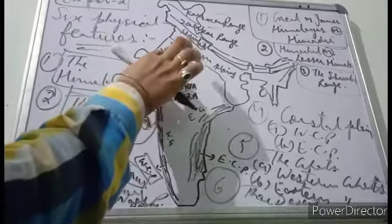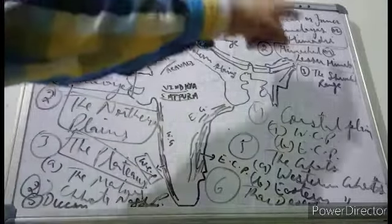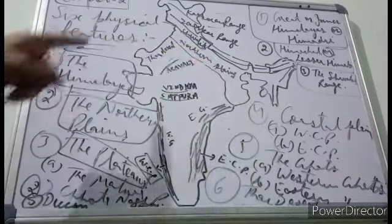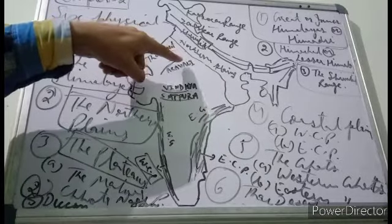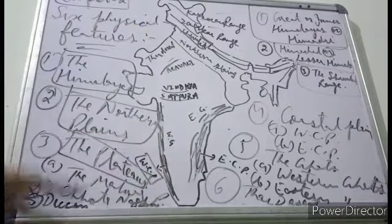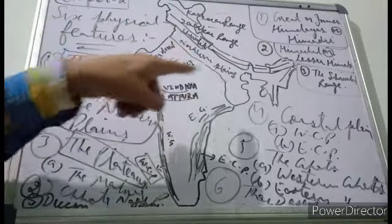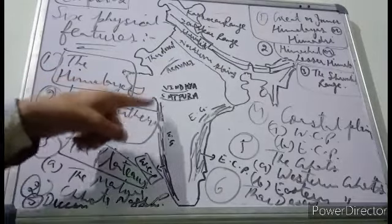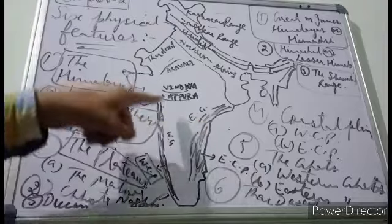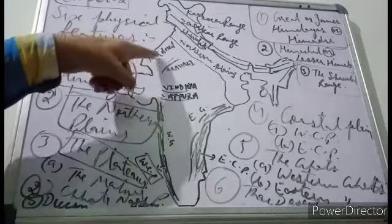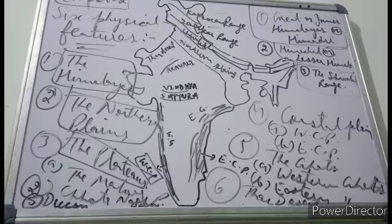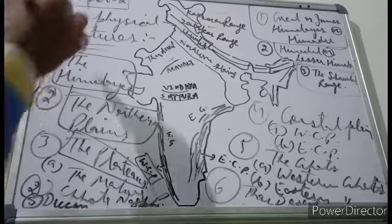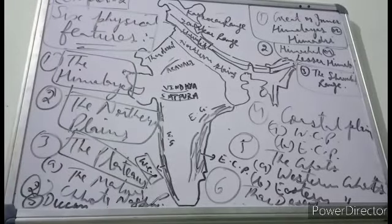So these are the six physical features of India: first, the Himalayas with three types; second, the Northern Plains from Punjab to West Bengal; third, the Plateau region from the Aravallis to the southern part of India — Malwa Plateau, Chota Nagpur Plateau, and Deccan Plateau; fourth, the Coastal Plains — Western and Eastern; fifth, the Ghats — Western and Eastern; and sixth, the Thar Desert in Rajasthan.